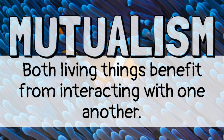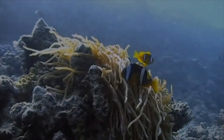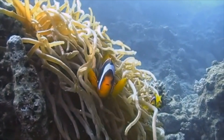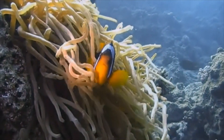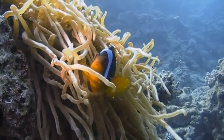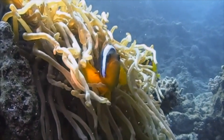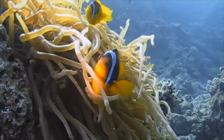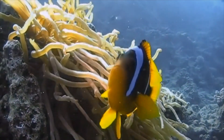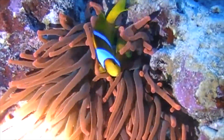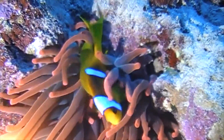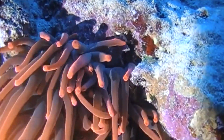One type of symbiotic relationship is called mutualism. Two living things have a mutual relationship when they both benefit from interacting with one another. For example, clownfish and sea anemone need each other to survive. Clownfish live among the tentacles of the sea anemone and protect the anemone by chasing away other fish that want to eat it. In return, the stinging tentacles of the anemone protect the clownfish from its predators.